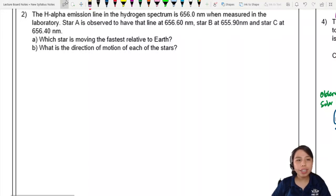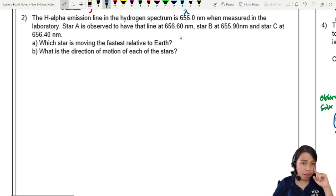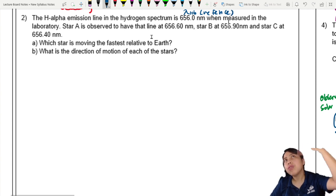In this example, the H-alpha emission line in the hydrogen spectrum is 656.0 nanometers when measured in the lab. So that's our reference, lambda in lab. It's our reference wavelength. Everything that moves with reference to this 656.